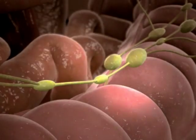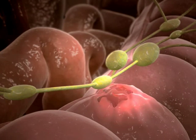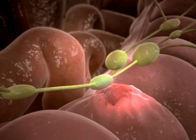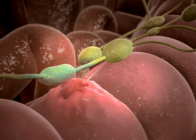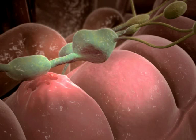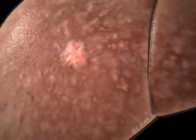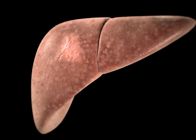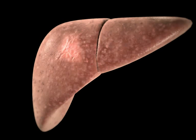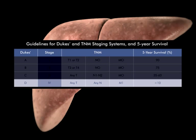Many blood and lymphatic vessels lie on the outer surface of the bowel wall, and cancer cells may be shed into local blood vessels, or may be carried to a local sentinel lymph node, from where a more distant spread of cancer may occur. Cancer cells that pass into the blood or lymphatic systems may be carried to many organs, such as the liver, where they may form secondary tumours, known as metastases.